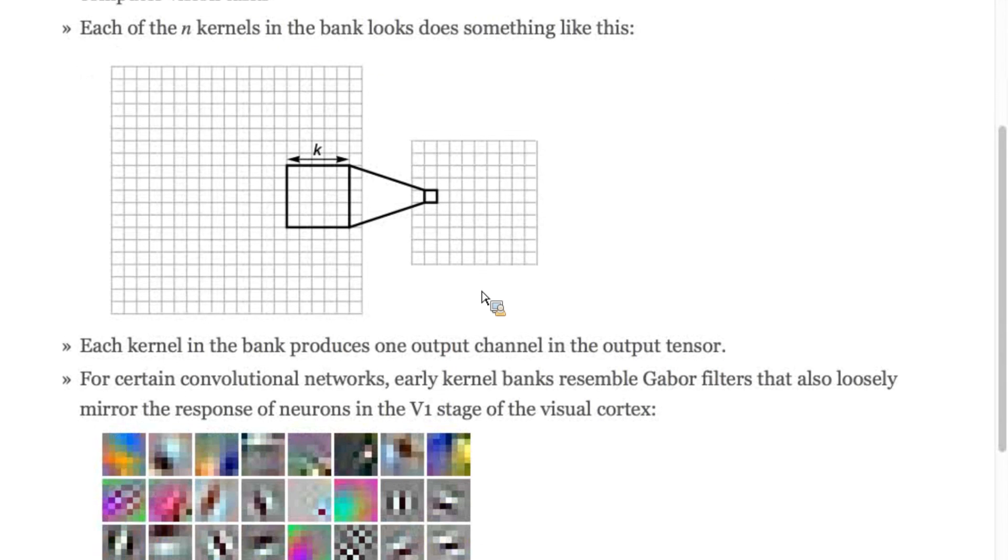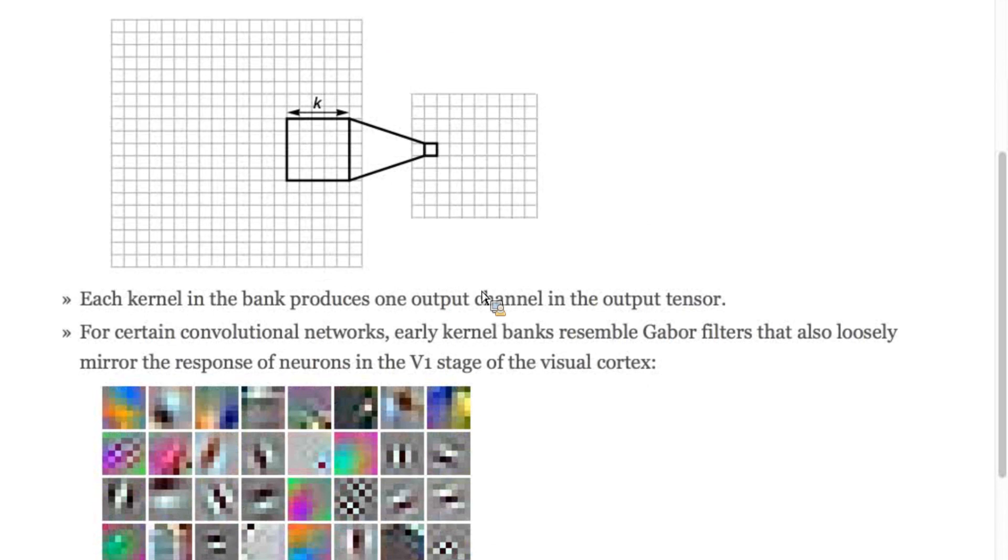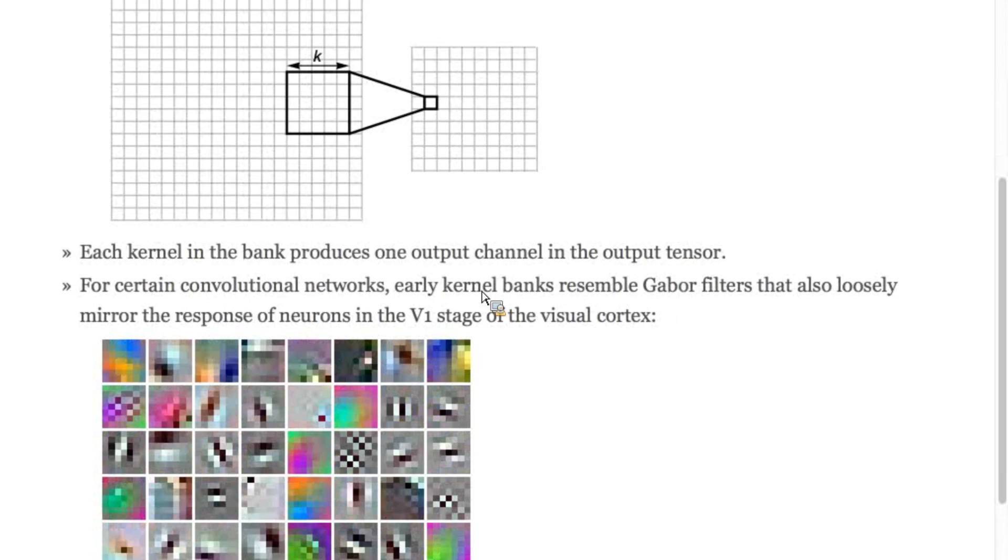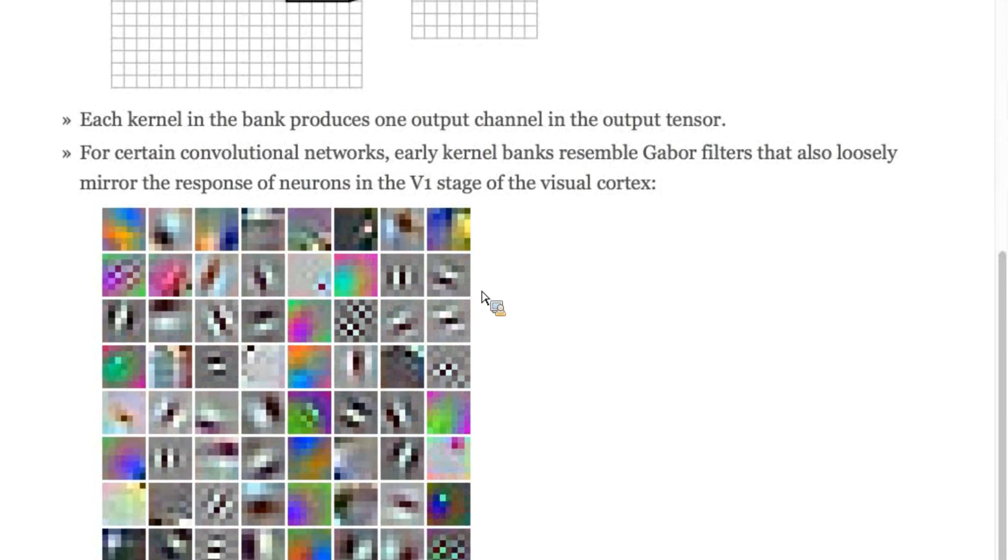It is possible to visualize these kernels. Interestingly, some convolution networks learn kernels that are reminiscent of the responses of neurons in the human visual cortex. Here are some examples from a particularly deep network.